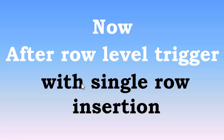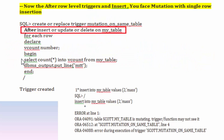After row-level trigger with single row insertion: here we create one trigger on my_table which is an after each row trigger on insert, update, and delete. The trigger tries to fetch all record values from my_table. After successfully creating this trigger, when we try to insert a single value into the table, we get a mutation error.